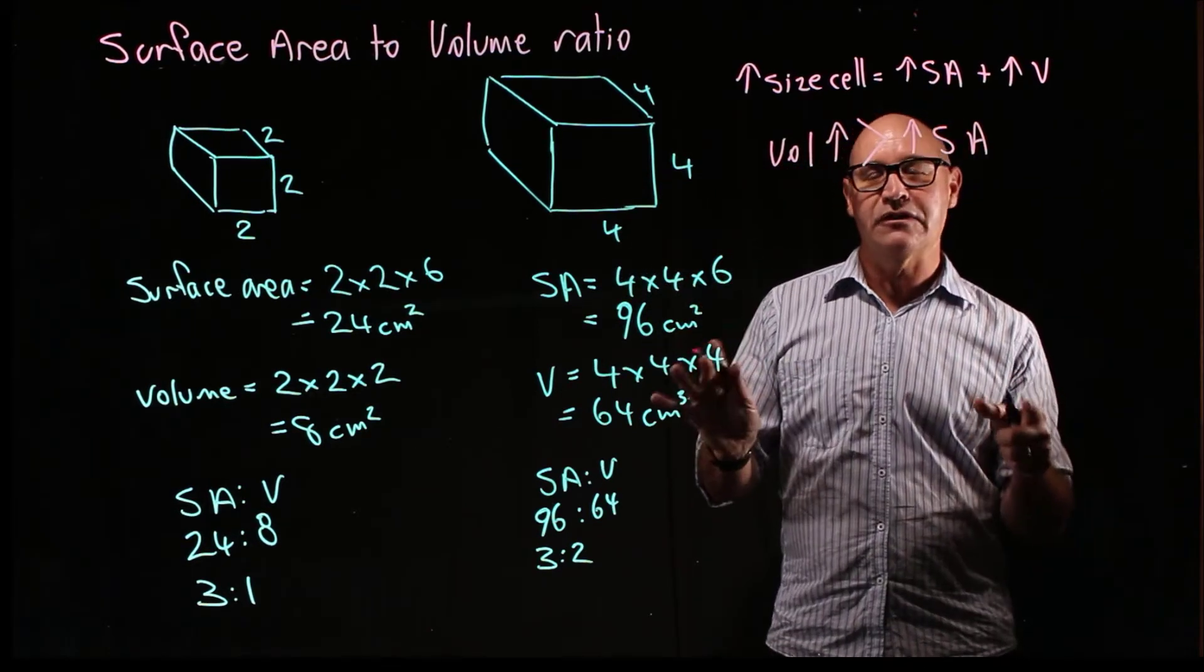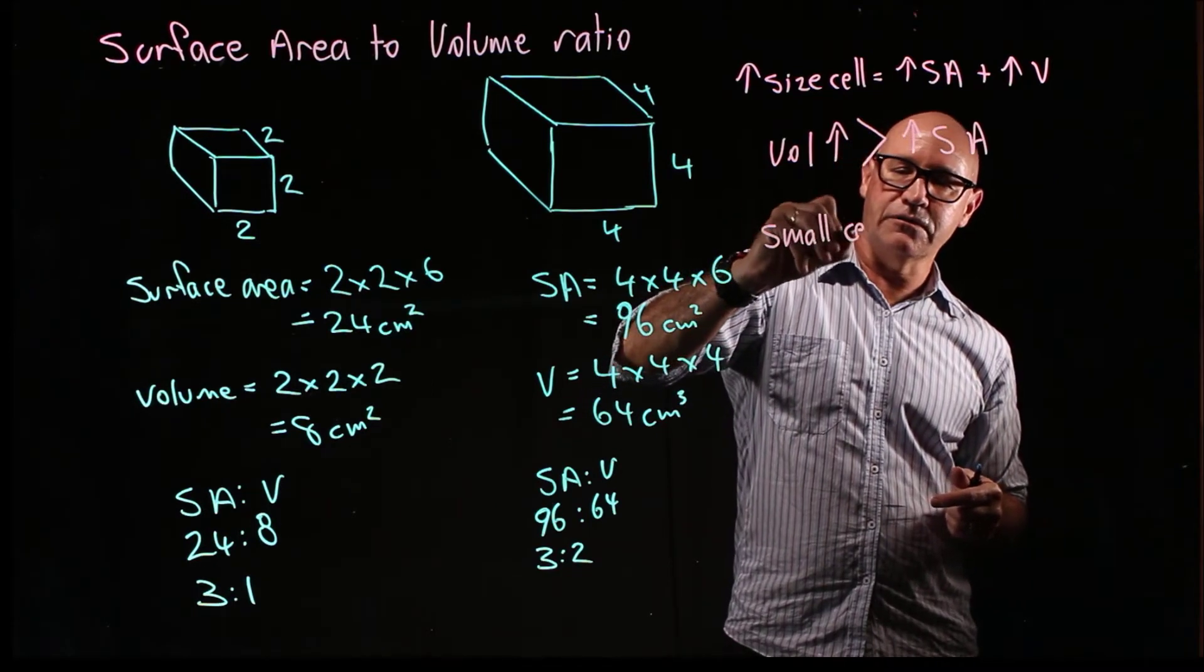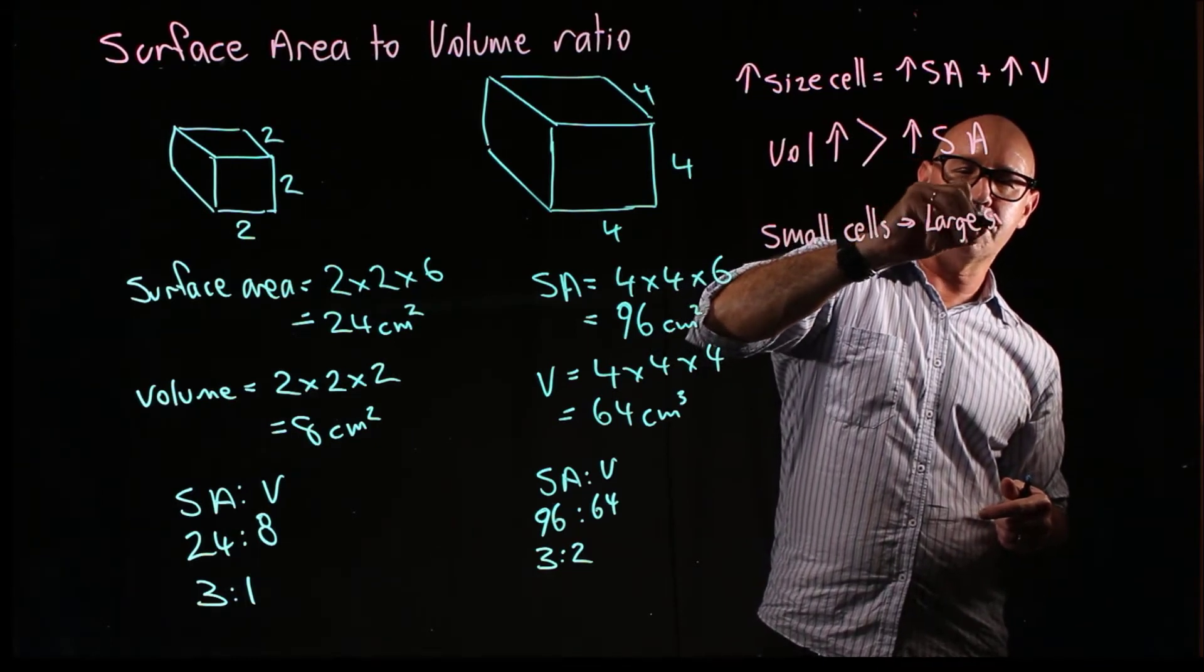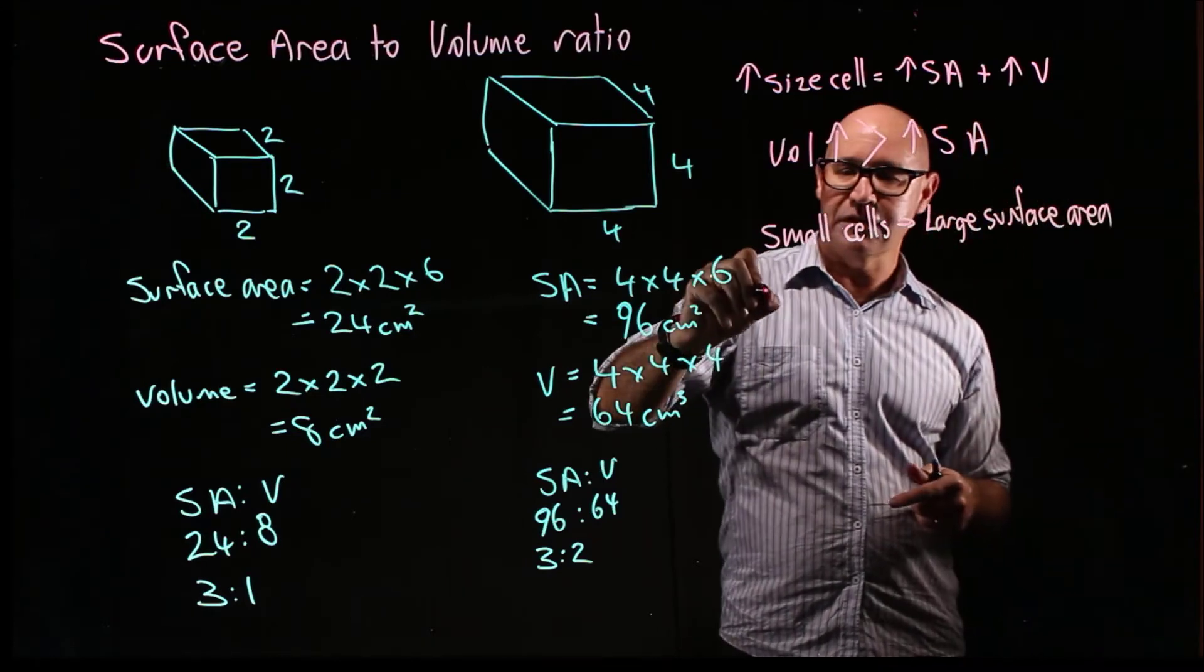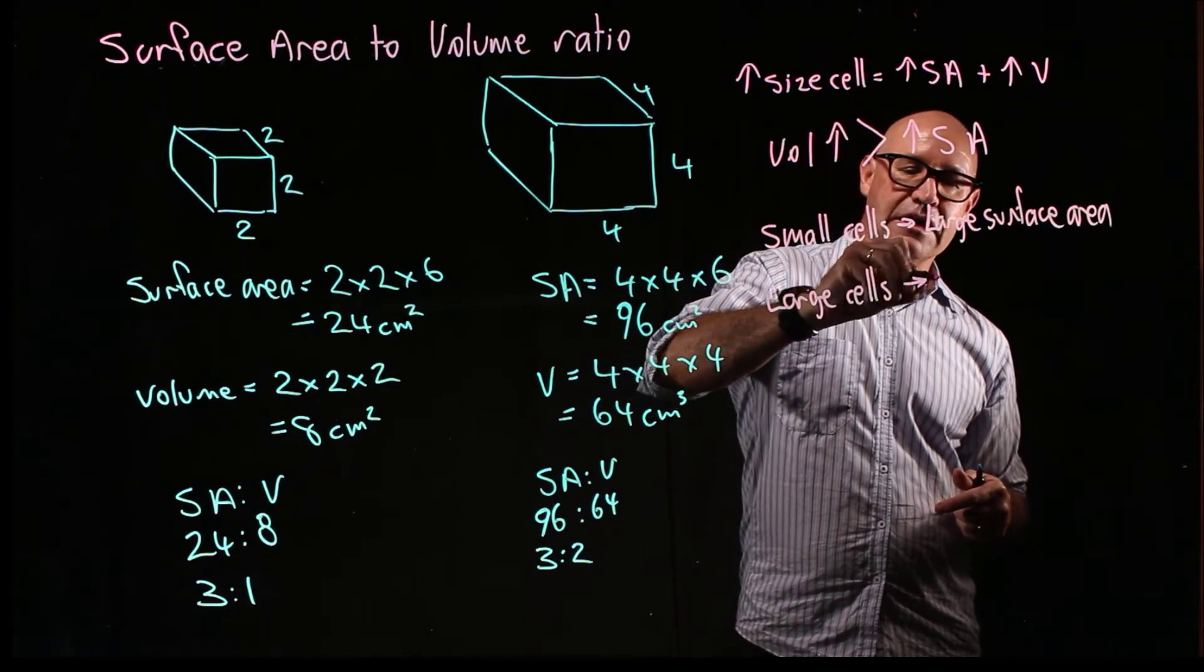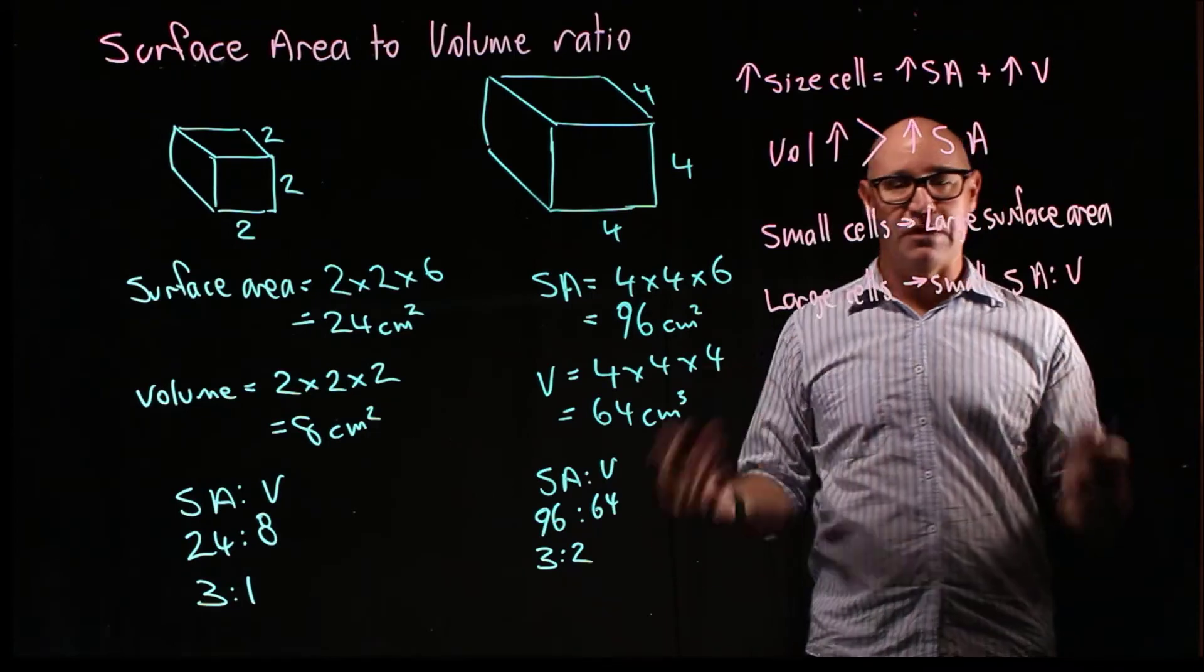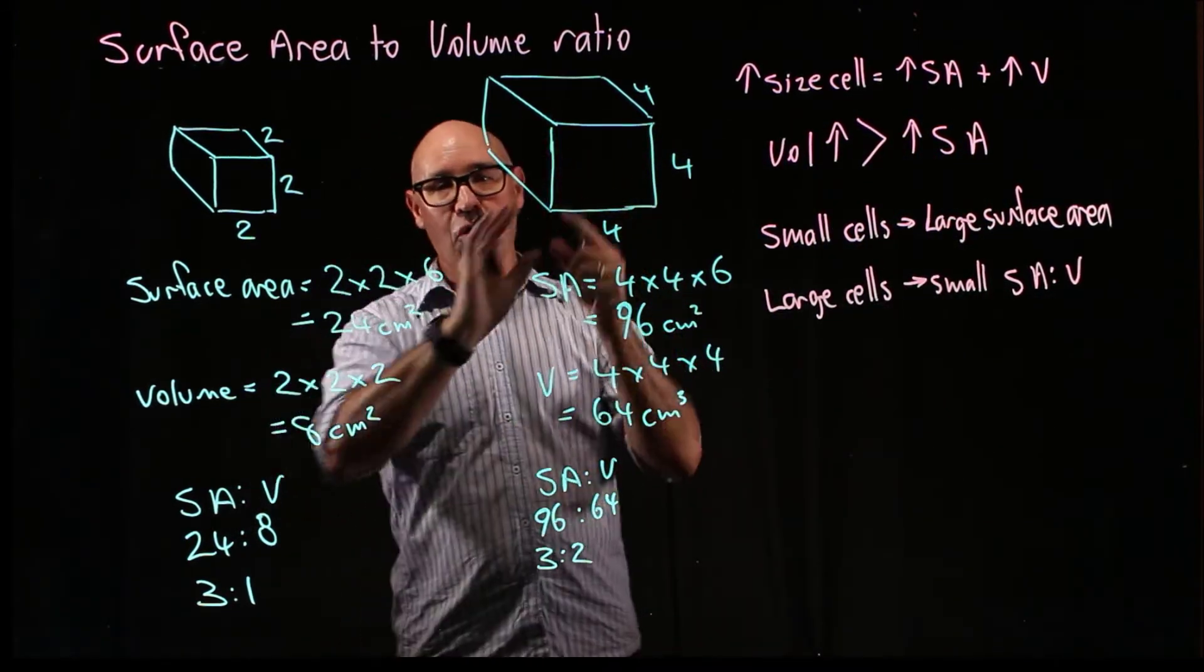So what that essentially means is that small cells have a large surface area to volume ratio. Now why is that important for a cell?